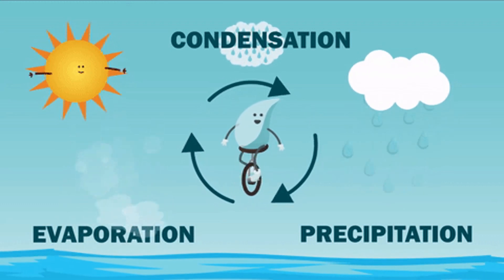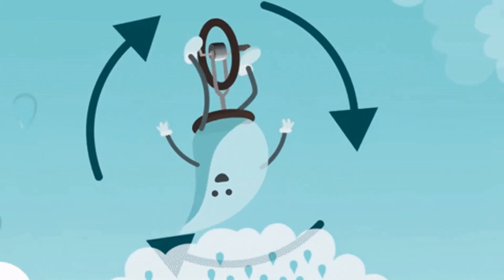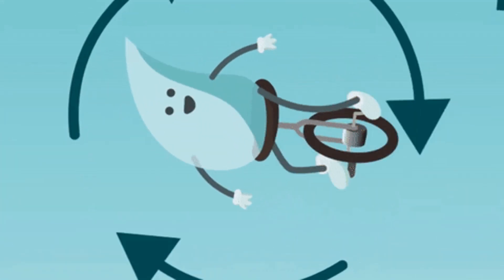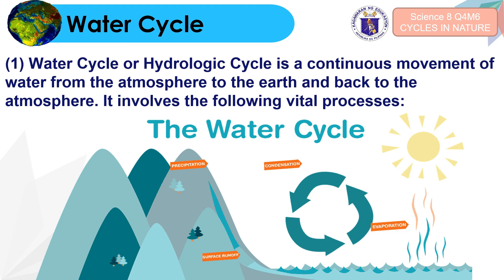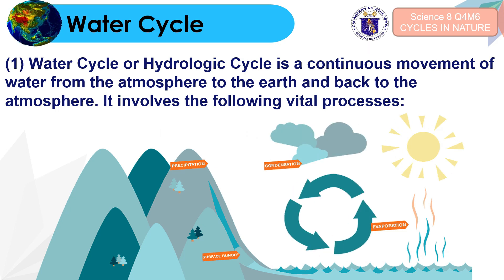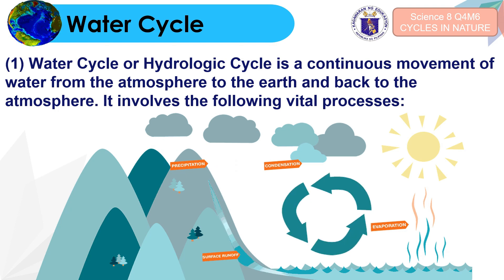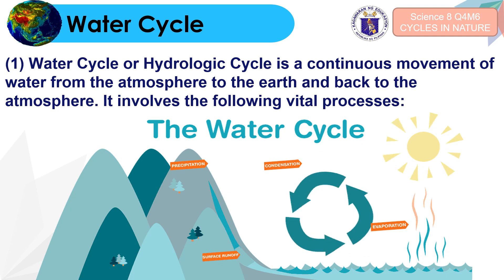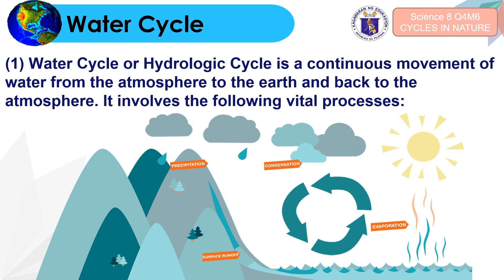Let us discuss the first cycle in nature: the water cycle. The water cycle is also known as the hydrologic cycle. It pertains to a continuous movement of water from the atmosphere to the earth and back to the atmosphere. It involves the following vital processes: precipitation, condensation, and evaporation.